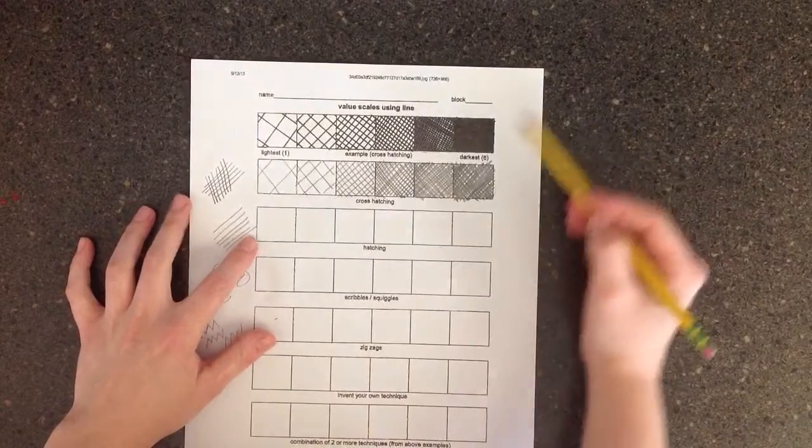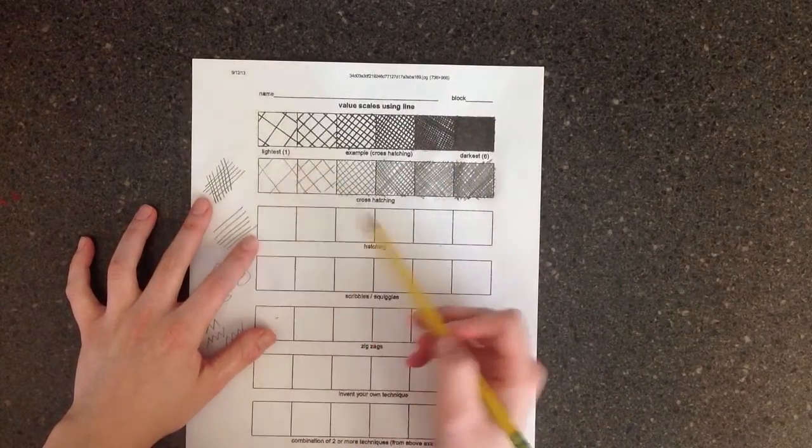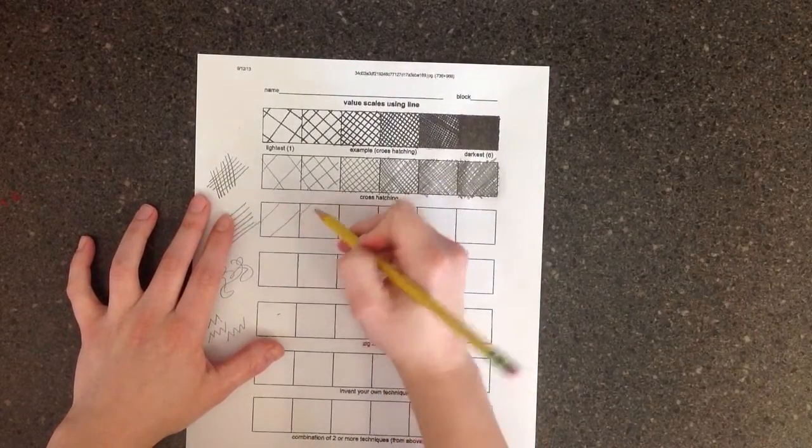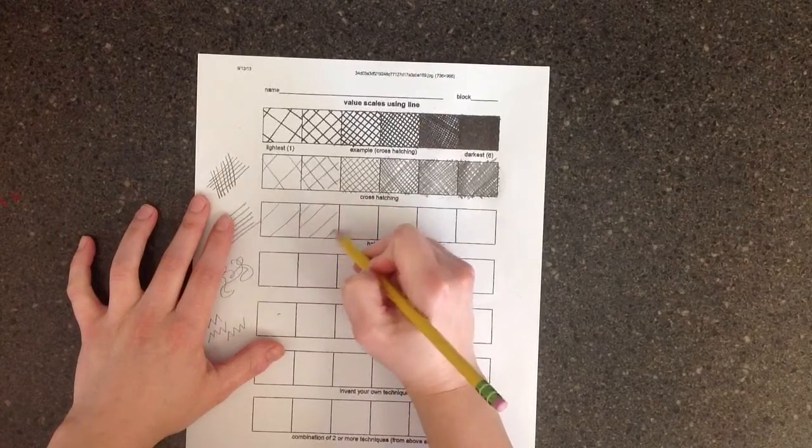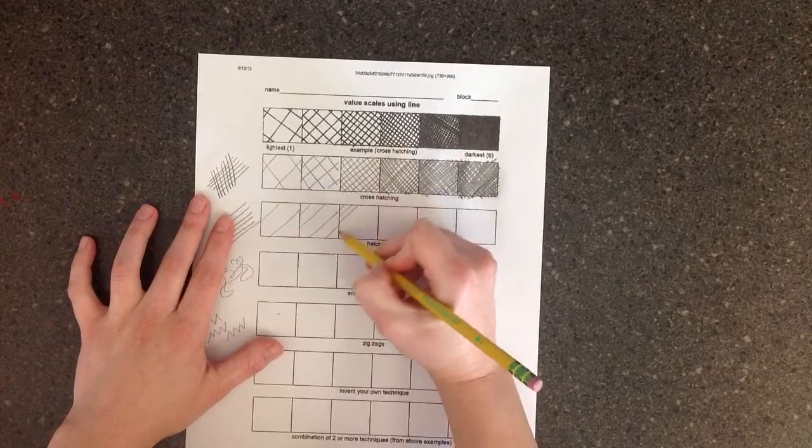The next one will be hatching. It's the same idea as this one, except you're only going to do one set of lines for hatching. So there's one. Start getting them closer together. It'll make it seem like the value is getting darker.